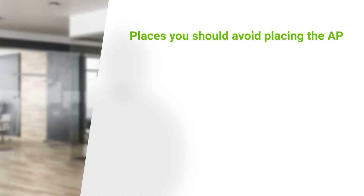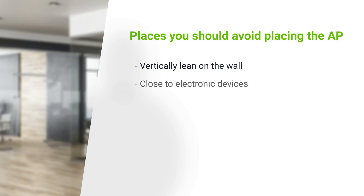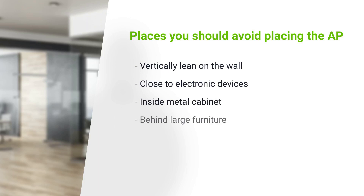Lastly, we list down some deployment mistakes that are usually made by people. First, letting the AP lean on the wall vertically. Second, placing the AP close to electronic devices. Third, placing the AP inside metal cabinets. Fourth, placing the AP behind large furniture like sofas.